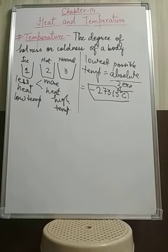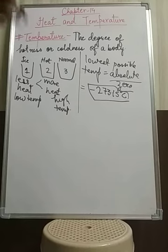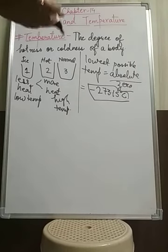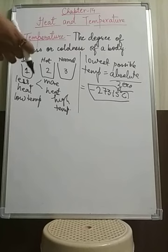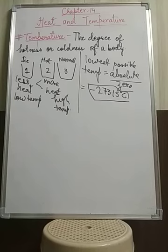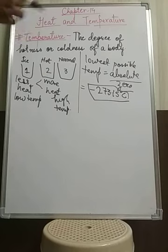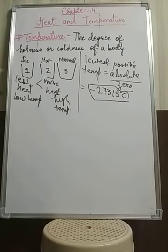The atoms and molecules in a substance are constantly moving or vibrating, and the temperature of an object also depends on how fast these atoms or molecules are vibrating. Whenever they get more heat energy, they vibrate faster, and when they get less heat energy, they vibrate slower. So their vibrations relate directly to temperature. If temperature decreases, their vibrations also slow down.